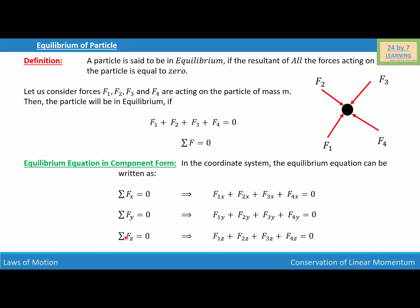And the last one is sigma Fz equals zero, which implies that F1z plus F2z plus F3z plus F4z equals zero.